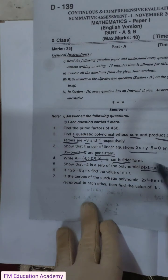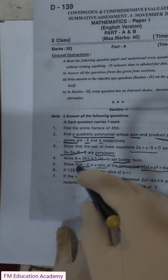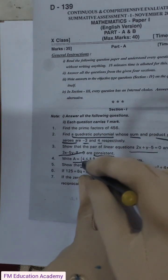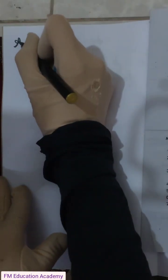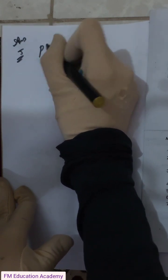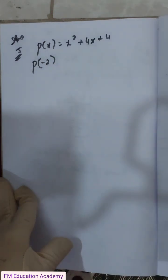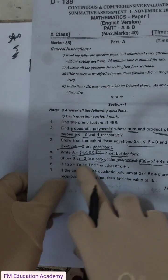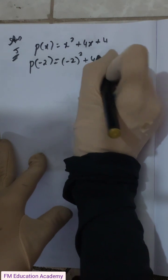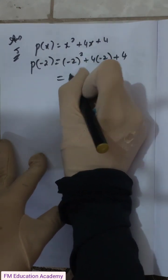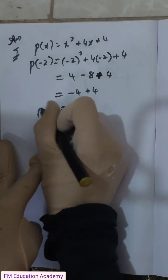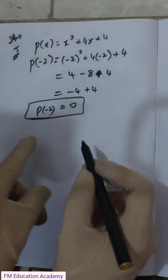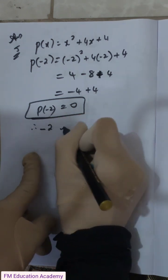Fifth question: show that −2 is a zero of the polynomial p(x) = x² + 4x + 4. To prove it is a zero, substitute x = −2 and check if the result is 0. p(−2) = (−2)² + 4(−2) + 4 = 4 − 8 + 4 = 0. Since p(−2) = 0, we can say that −2 is a zero of the polynomial.